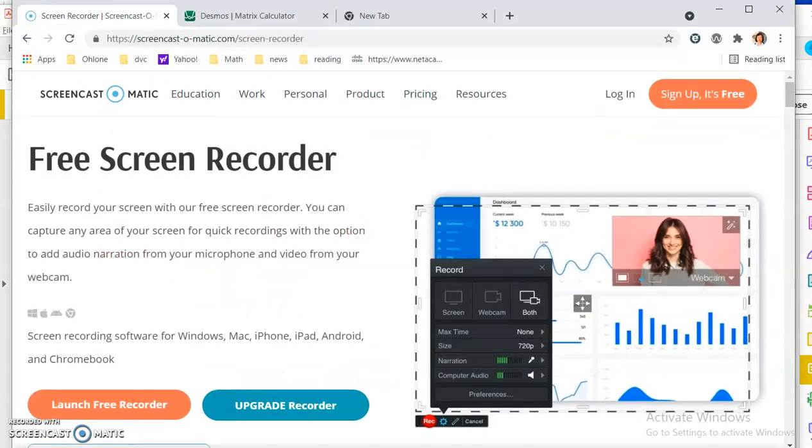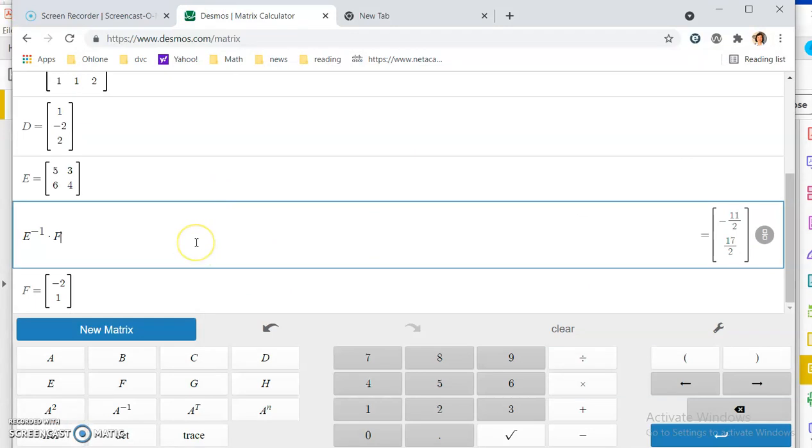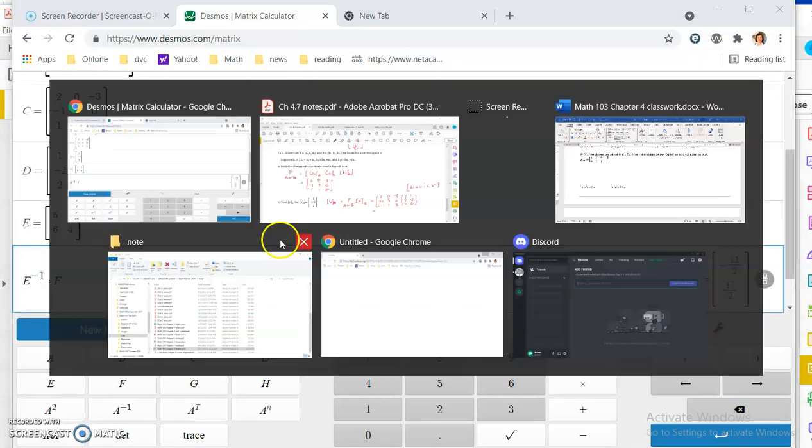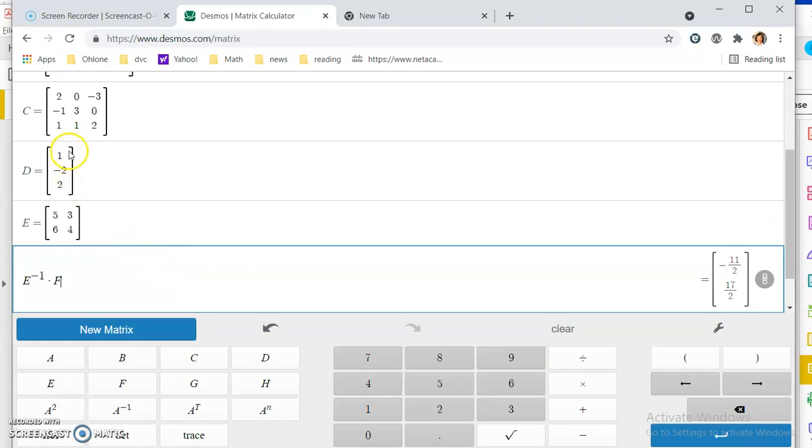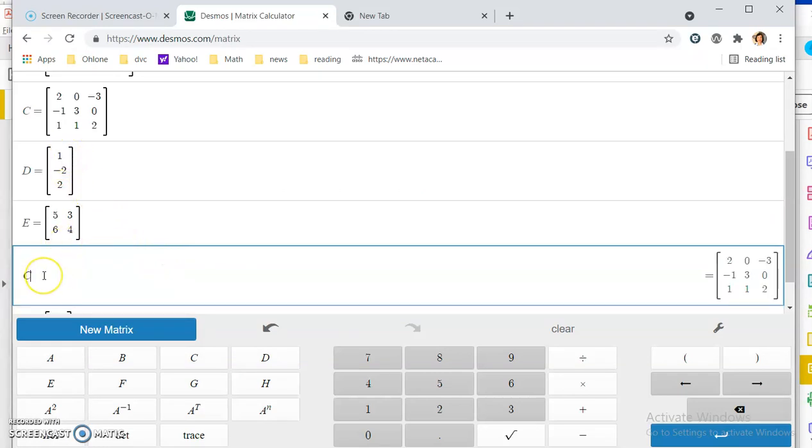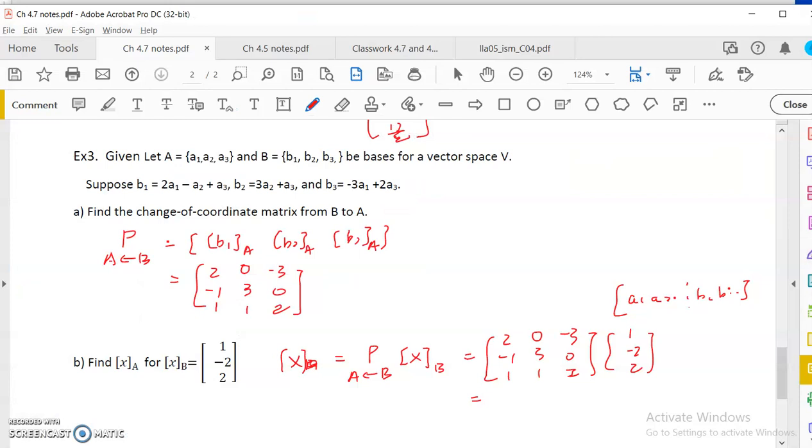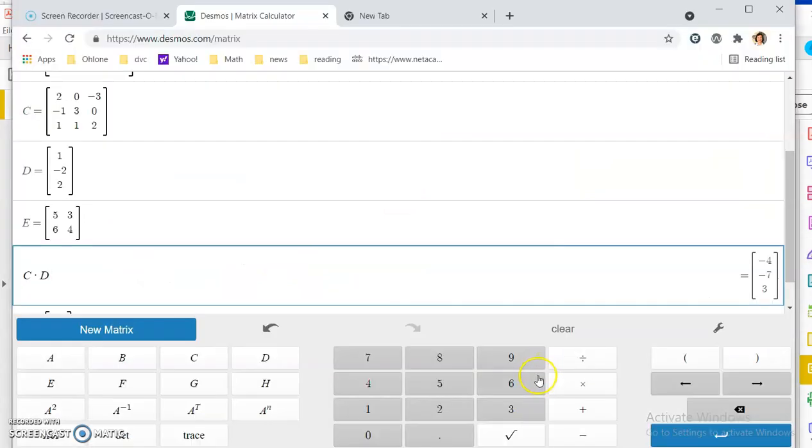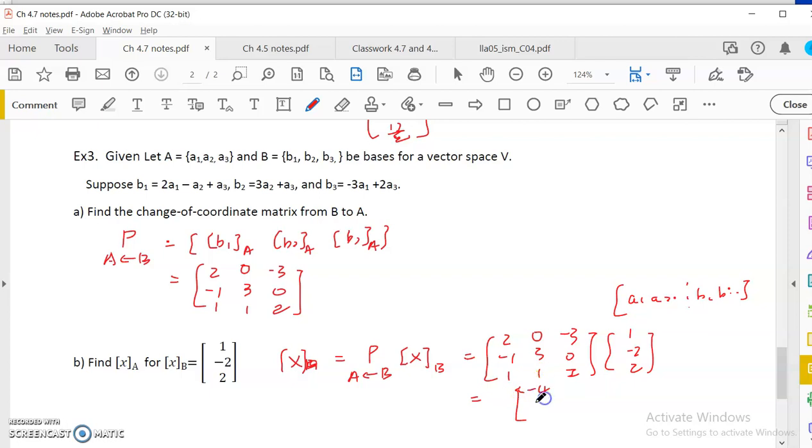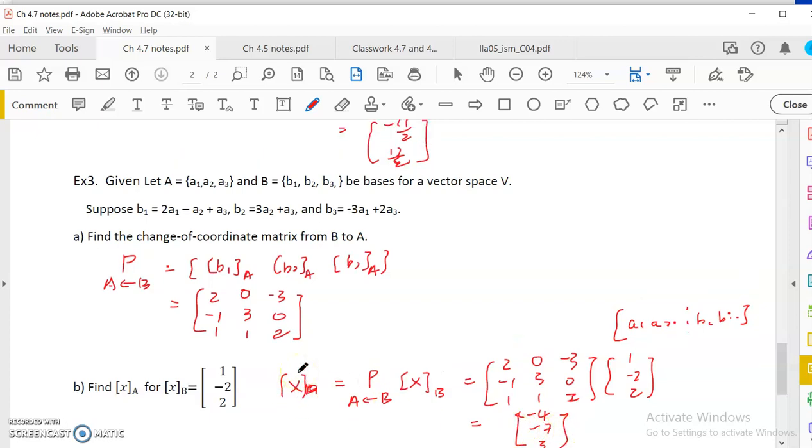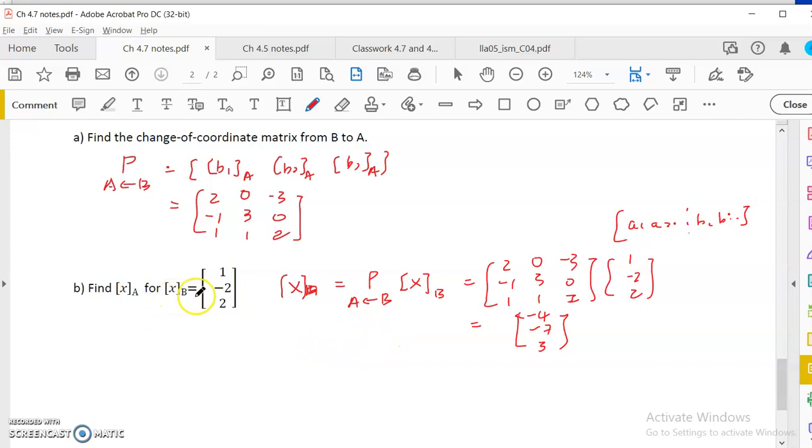I have it written in the matrix: 2, negative 1, 1; 0, 3, 1; negative 3, 0, 2. And then I have B, D. So basically, I just do C times D, that would be negative 4, negative 7, 3. And that's the answer. So this is the new coordinate vector for x of B when it's written in A.